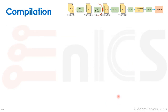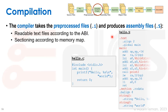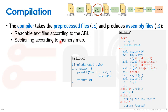That covers the preprocessor: it parses the code and replaces pound directives with other code before passing to the compiler. We don't usually see the intermediate .i preprocessed files — we go straight into the compiler. The compiler takes these preprocessed files and produces assembly files, transforming high-level behavioral descriptions into the instruction set defined by our ISA and ABI, producing readable text files sectioned according to the memory map.